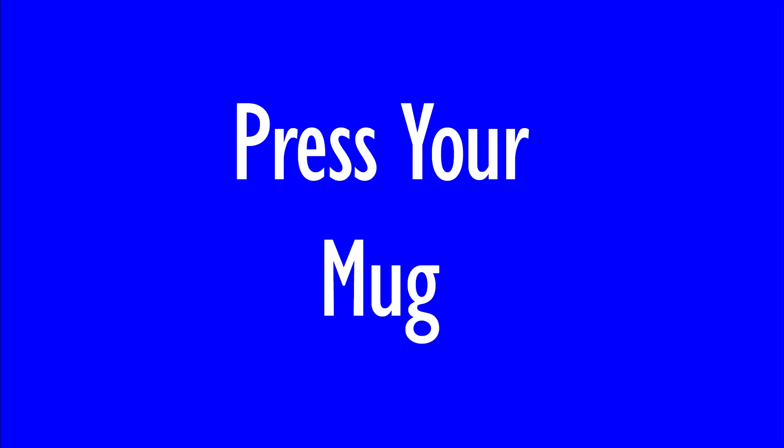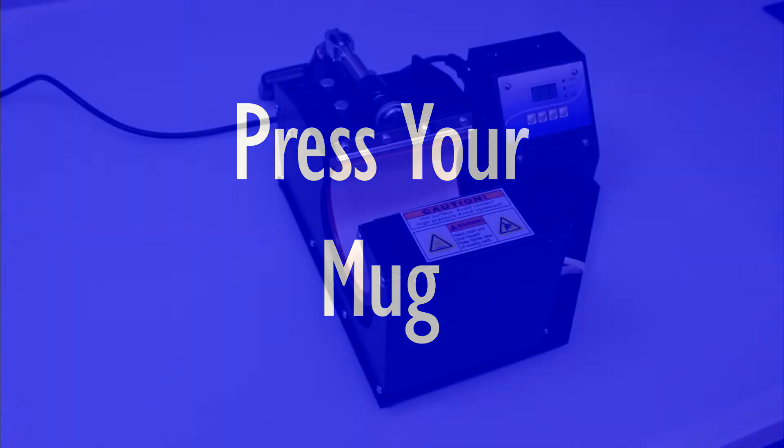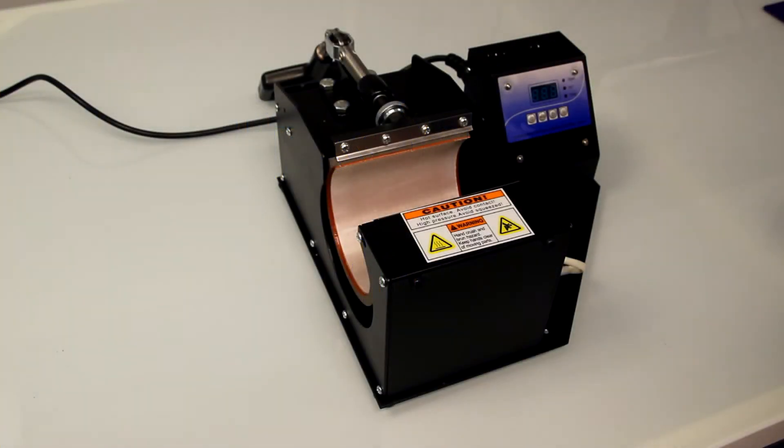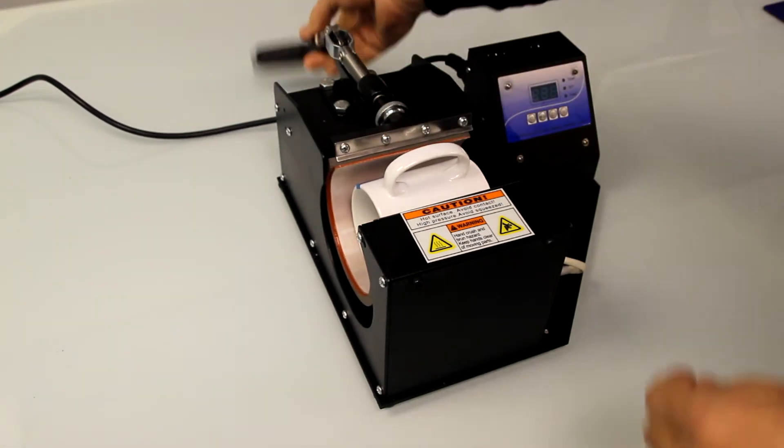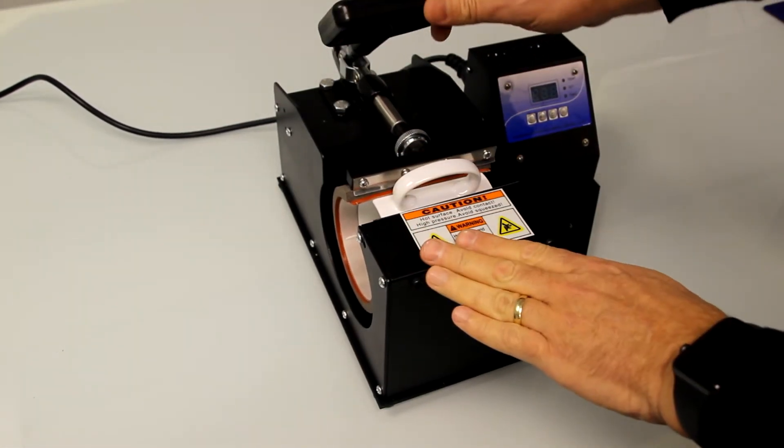A little extra heat tape can be applied and then with the mug press turned off and cold you need to set the pressure for your Durham mugs. You will only ever need to do this once.